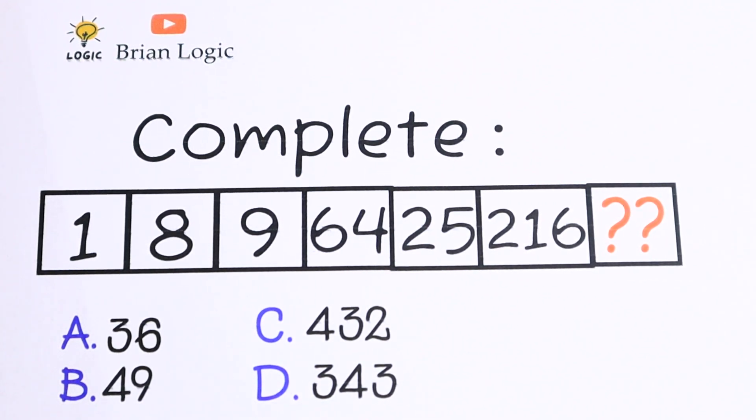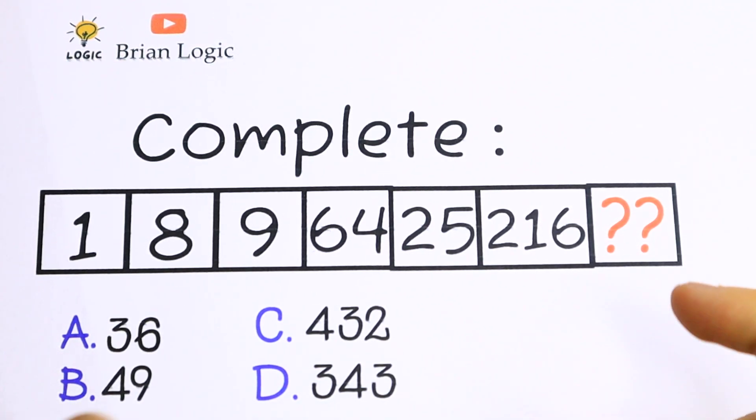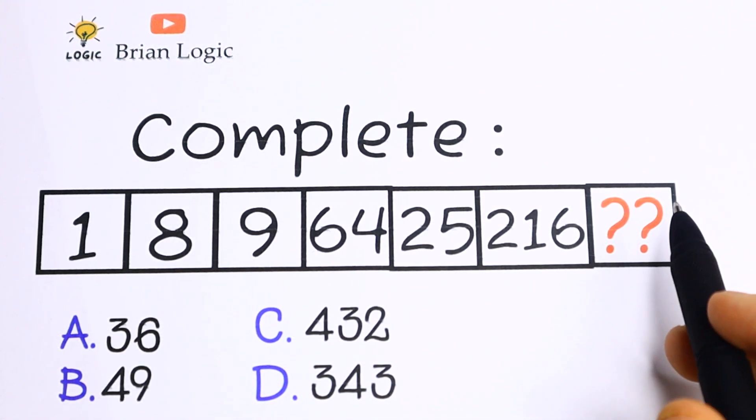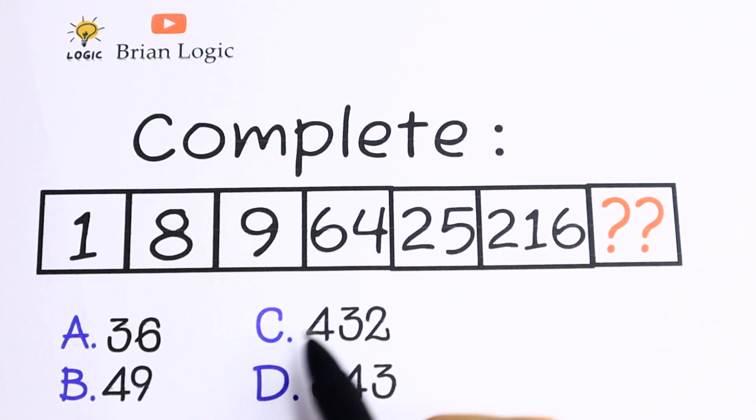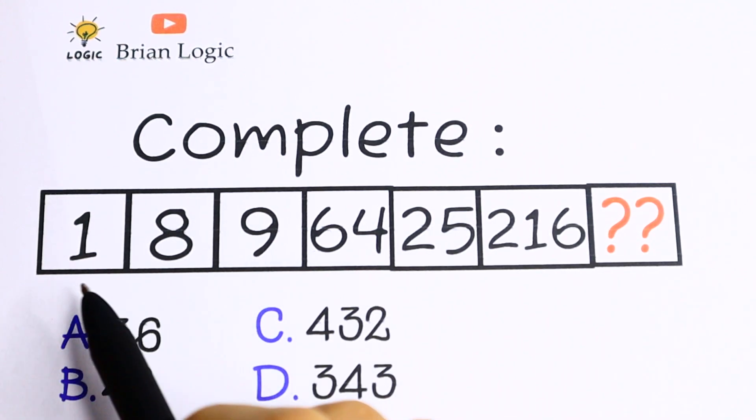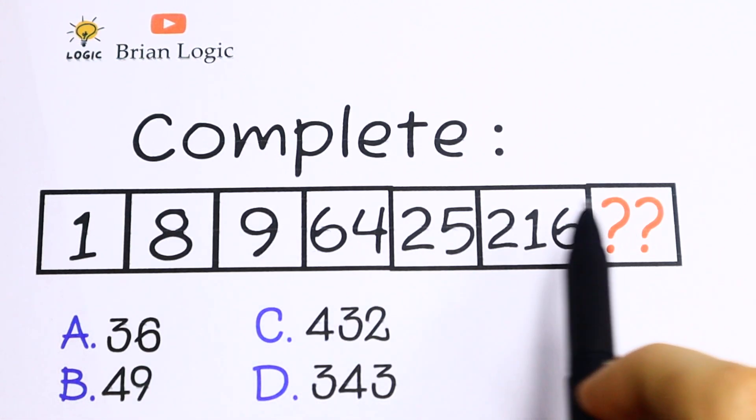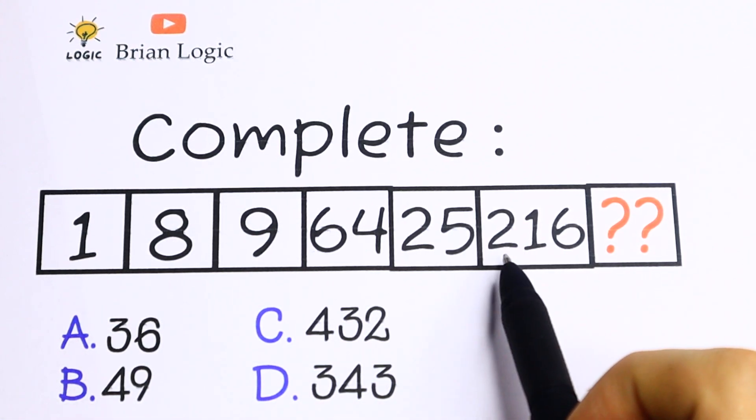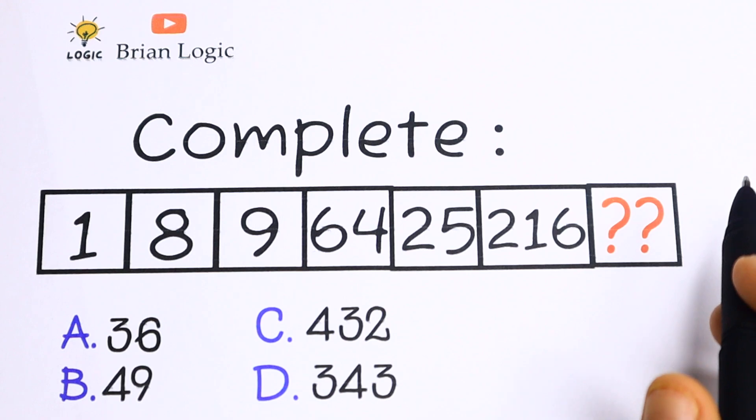Hello everyone, let's enhance our logic. Today we're going to solve this interesting IQ question. What will the following number be in this numeric series? What is the pattern between all of these numbers? We have a really long series: 1, 8, 9, 64, 25, 216, and we need to find the last one.